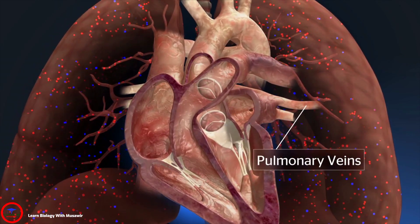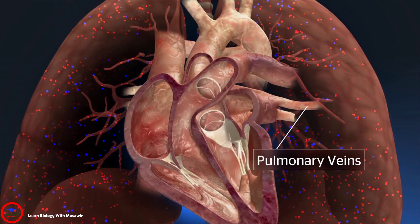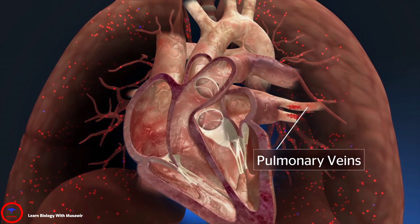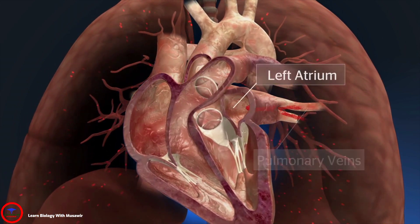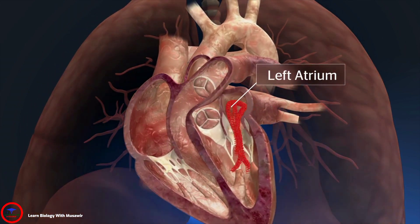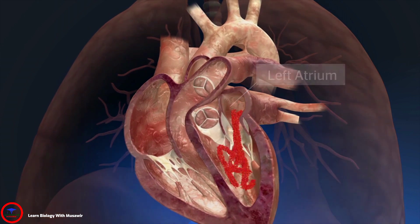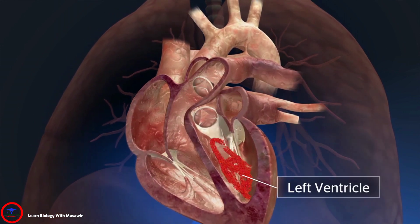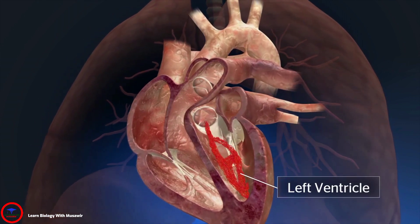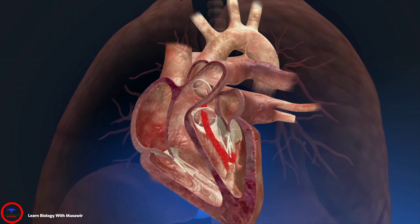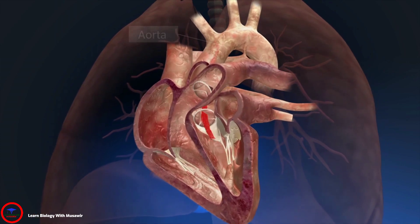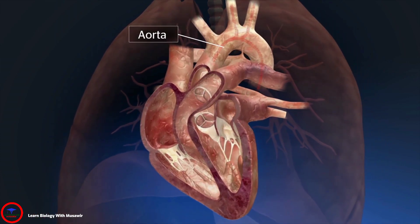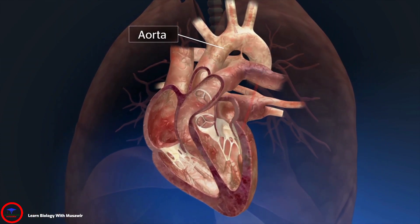The pulmonary veins then transport the oxygen-rich blood from the lungs back into the left atrium of the heart. The blood then flows from the left atrium to the left ventricle before leaving the heart through the aorta and circulating to the organs and tissues of the body through the arteries.